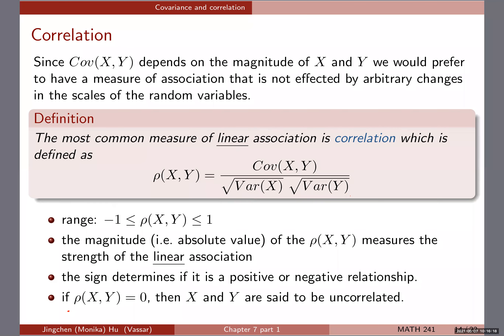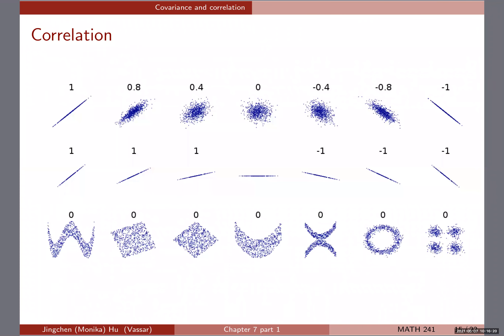The closer rho is to zero, the weaker the linear relationship. The closer it is to positive one, the stronger the positive correlation. The closer rho is to negative one, the stronger the negative correlation. We have a few graphs here just to give you a sense of how correlation really takes place in practice. Let's start with the first row.